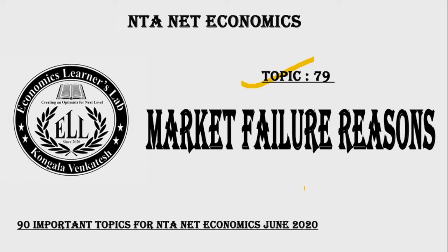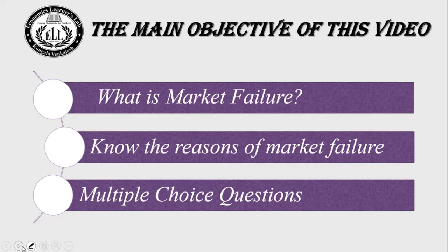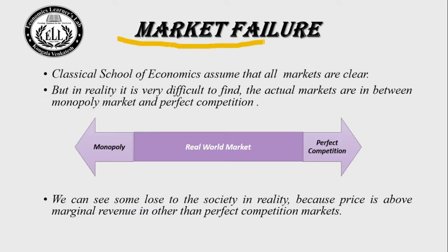Let's begin today's topic — Topic Number 79: Market Failure Reasons. This is a very important topic for the Internet Economics exam, and you can expect one question from it. The main objective of this video is to understand what market failure is, know the reasons for market failure, and then solve some multiple choice questions.